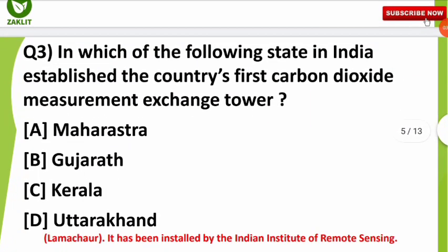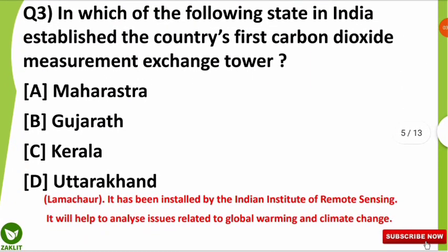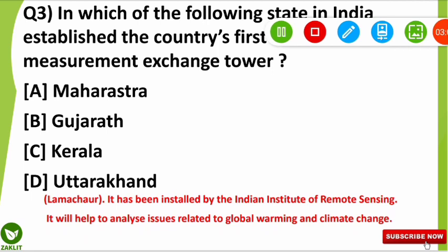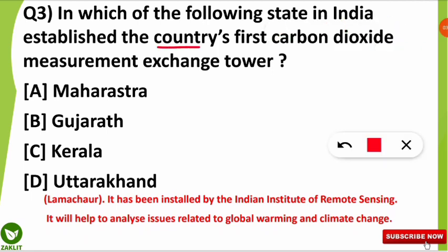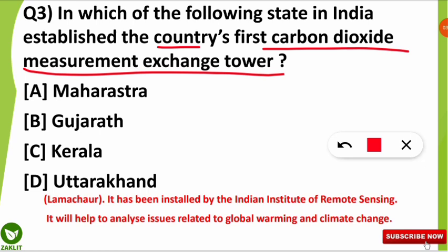The third question asked: in which of the following states in India was the country's first carbon dioxide measurement exchange tower established? This is not about a mobile or internet tower — this is specifically a carbon dioxide measurement exchange tower. The correct option is option D: it has been installed in Lalmachaur, Uttarakhand.